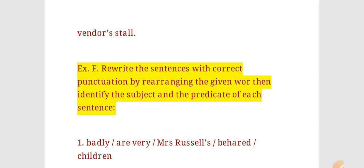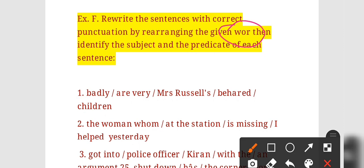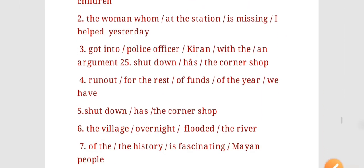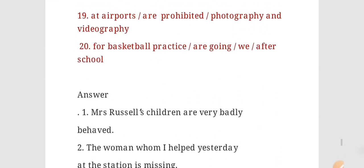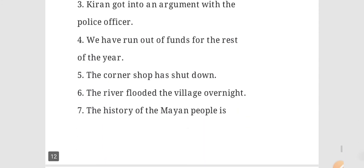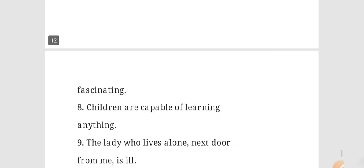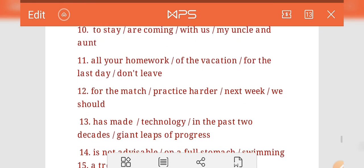Now Exercise F says: rewrite the sentences with correct punctuation by arranging the given words, then identify the subject and predicate in each sentence. This exercise is on page number 78. Sentences one through twenty are given and all the answers are provided here — you can match and then write your answers in your copy.